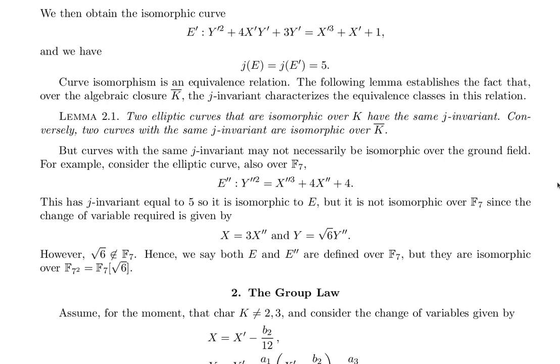Curve isomorphism is an equivalence relation. The following lemma establishes the fact that over the algebraic closure K-bar the j-invariant characterizes the equivalence classes in this relation. Lemma 2.1: Two elliptic curves that are isomorphic over K have the same j-invariant. Conversely, two curves with the same j-invariant are isomorphic over K-bar, the algebraic closure of K.